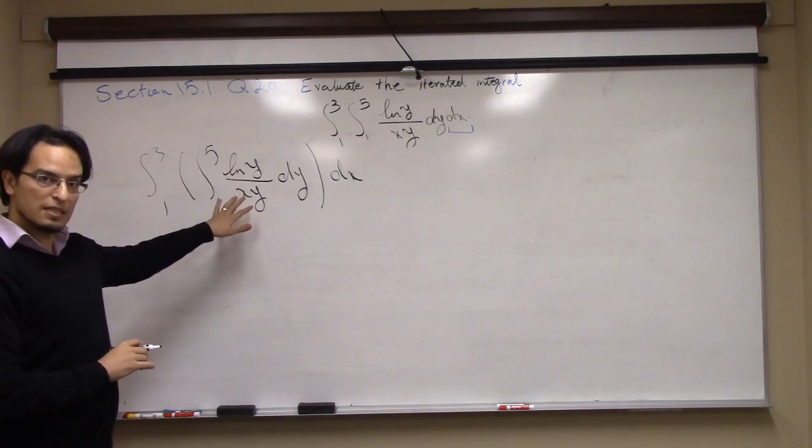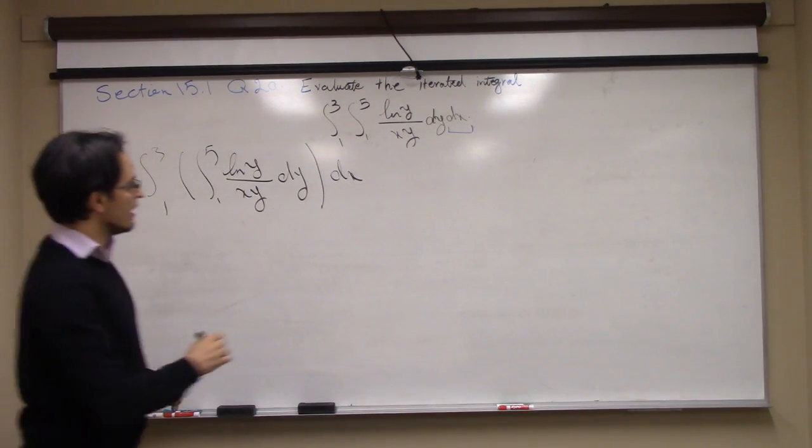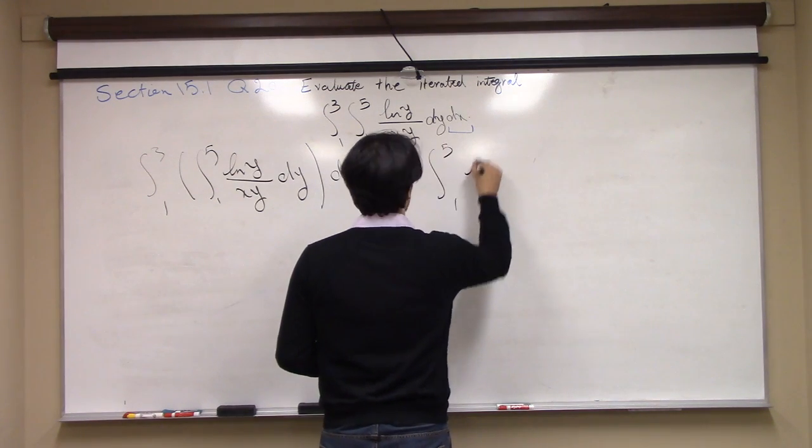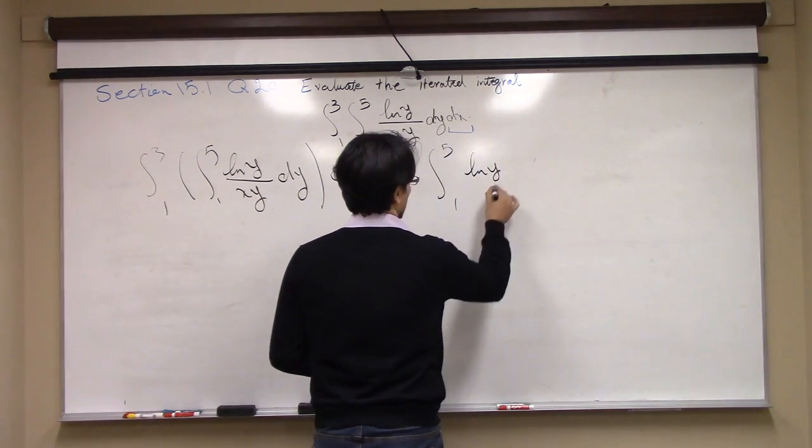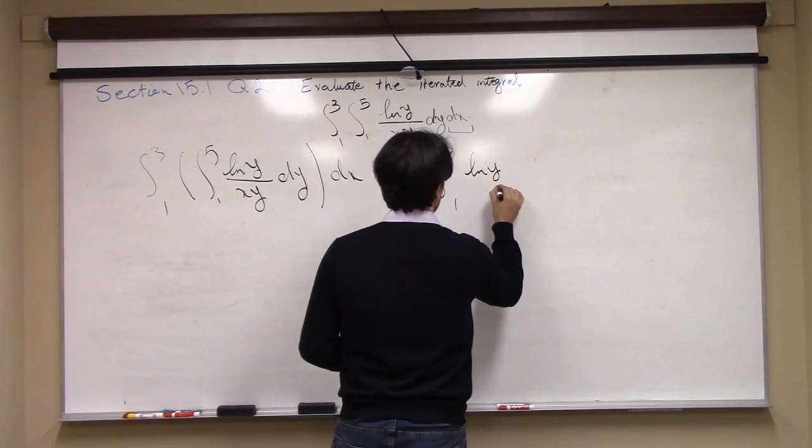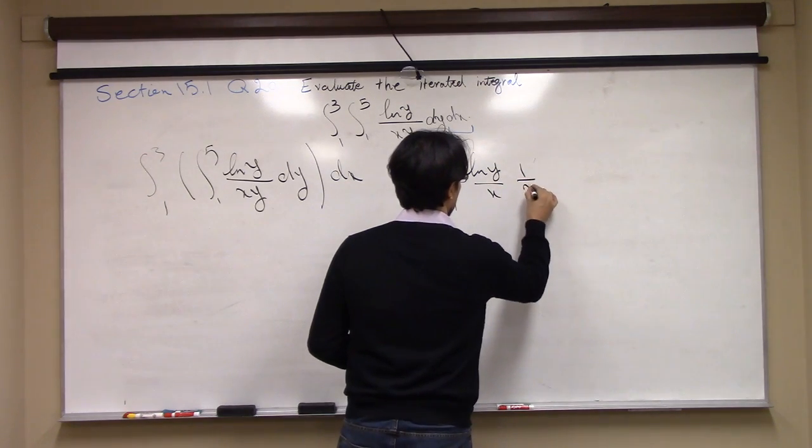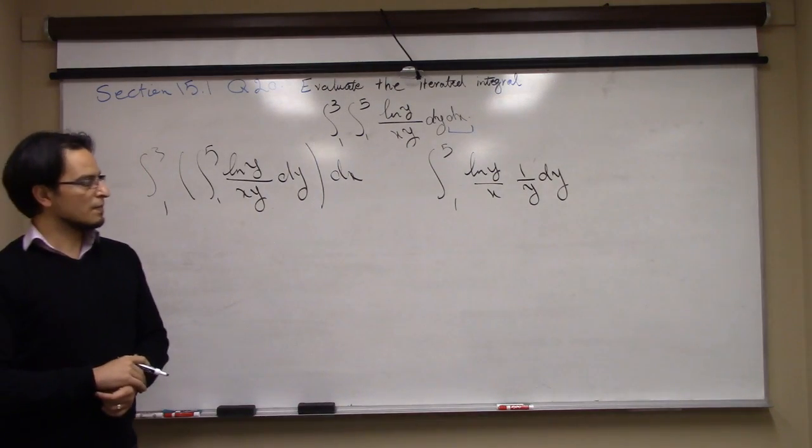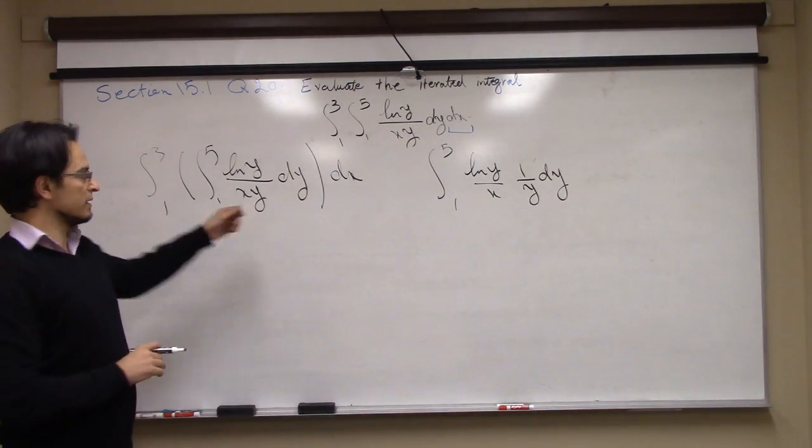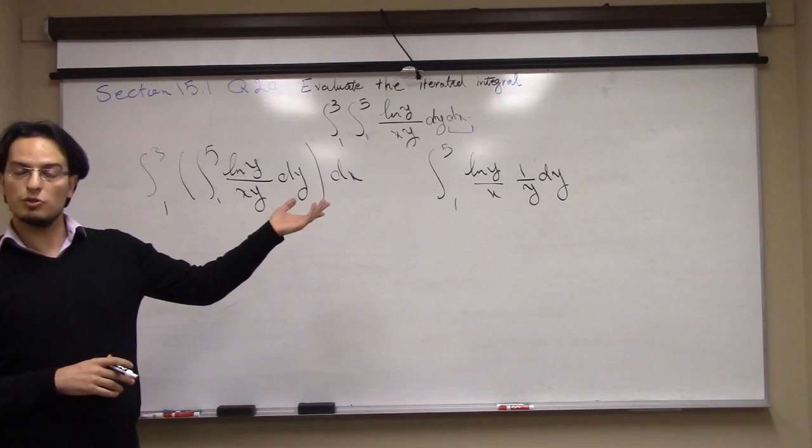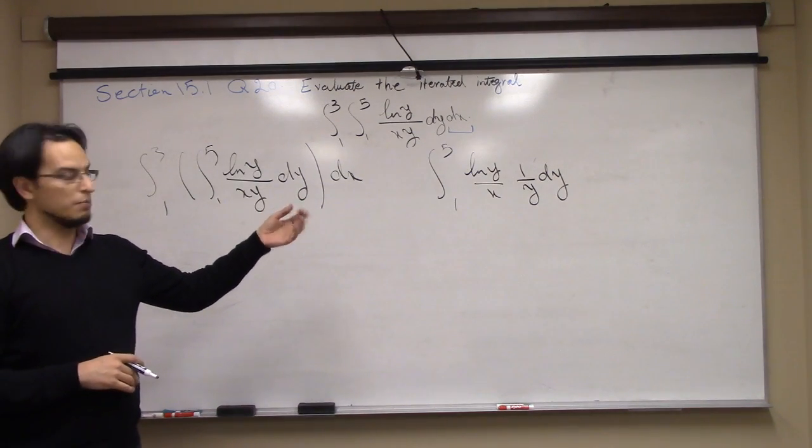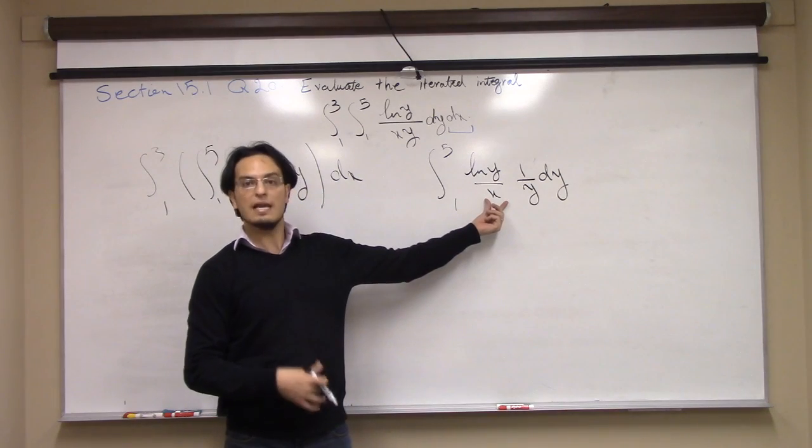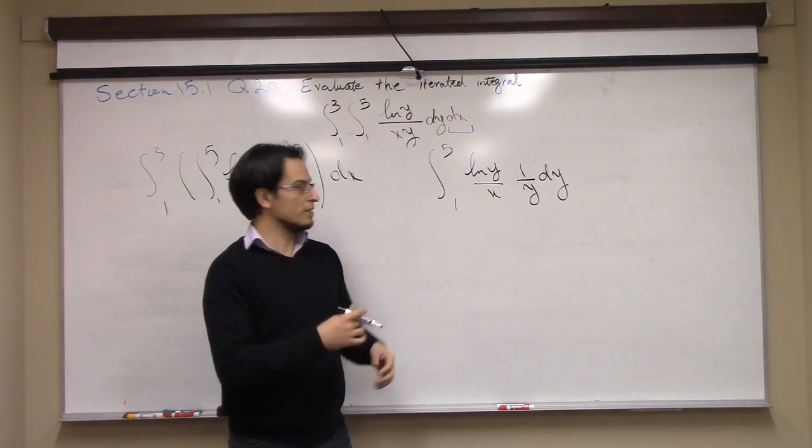We have to integrate this with respect to y, so let's separate it: ln y times x times 1 over y dy. The reason I separated it is because I'm going to use a change of variable. This is one integral with one variable - you take x as constant and go from there.